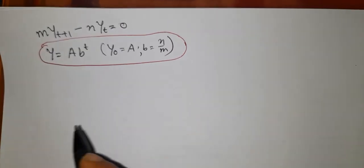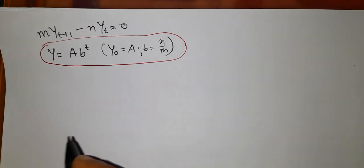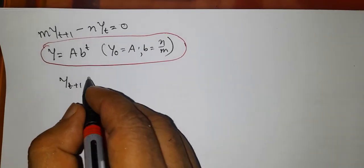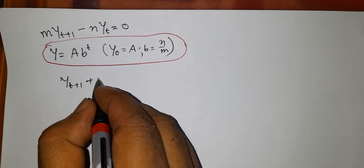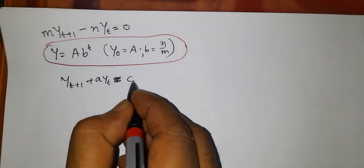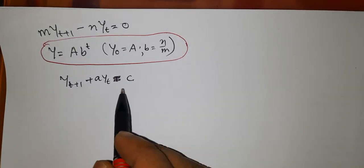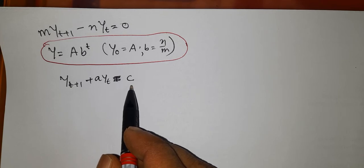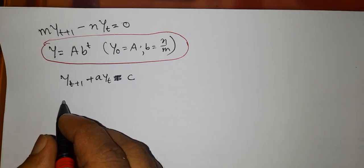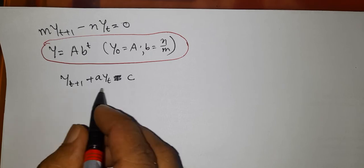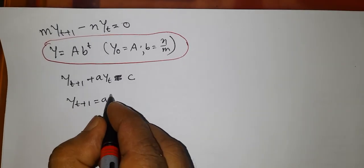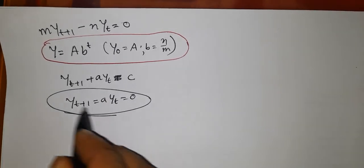Now let us take another form of first order difference equation: y_{t+1} + a·y_t = c, where we have a constant term c. In such a case, first we find the solution of the homogeneous part, that is y_{t+1} + a·y_t = 0.